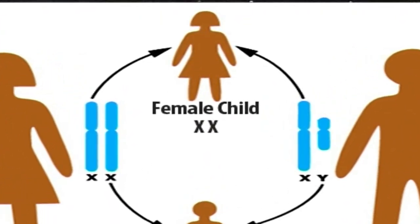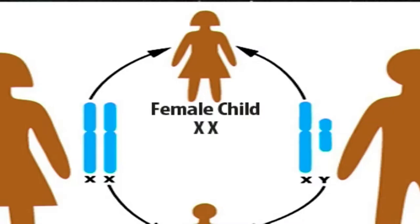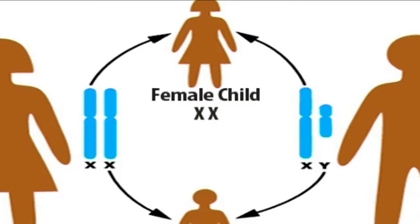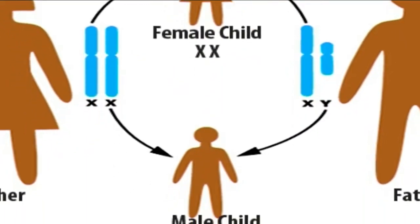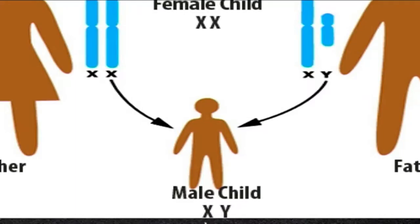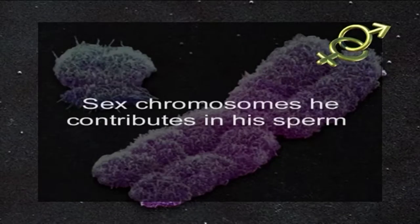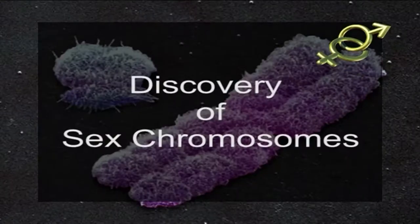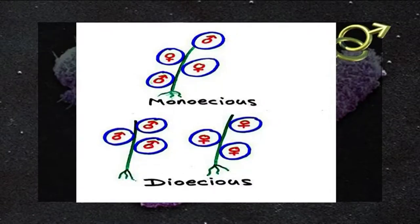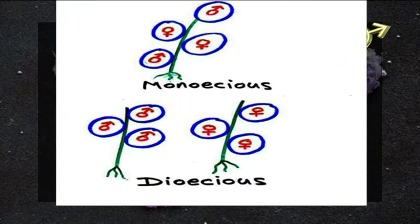If the sperm has an X chromosome, the resulting offspring will have two X chromosomes and will be a female XX. If on the other hand the sperm contributes a Y chromosome, the zygote that forms as a result of fertilization will have one X and one Y chromosome and will be a male XY. In humans and many other species, it is the male that is responsible for the determination of sex of the offspring, depending on which sex chromosome he contributes in his sperm.